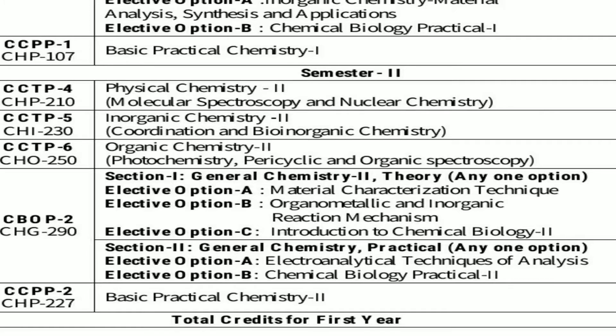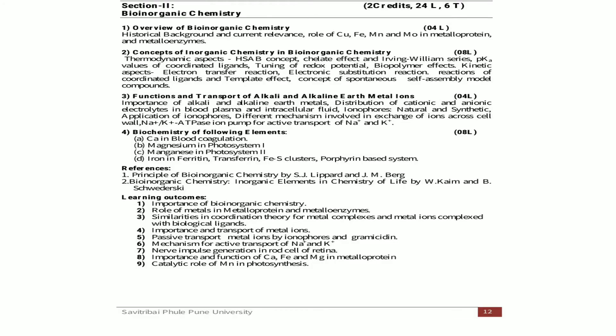For the practical, we are going to learn option A, that is electroanalytical technique of analysis. The last course is CHP 227, basic practical chemistry. Now, our section — section two — is a two-credit course having 24 lectures and six tutorials. The course is bio inorganic chemistry, and the coordination chemistry section is taught by Sani Madam while bio inorganic chemistry will be taught by me.